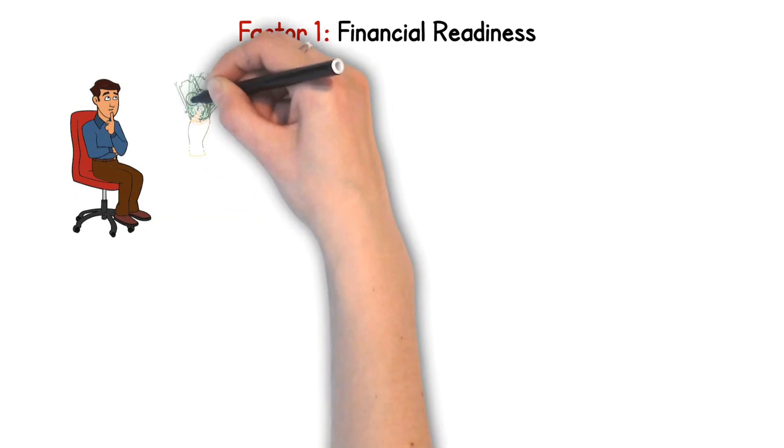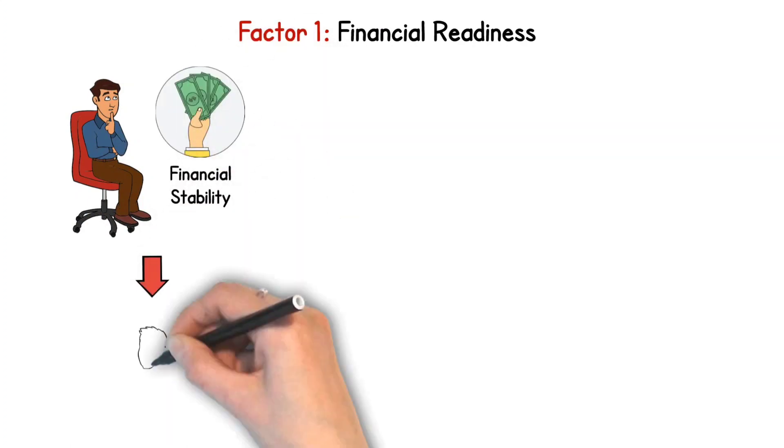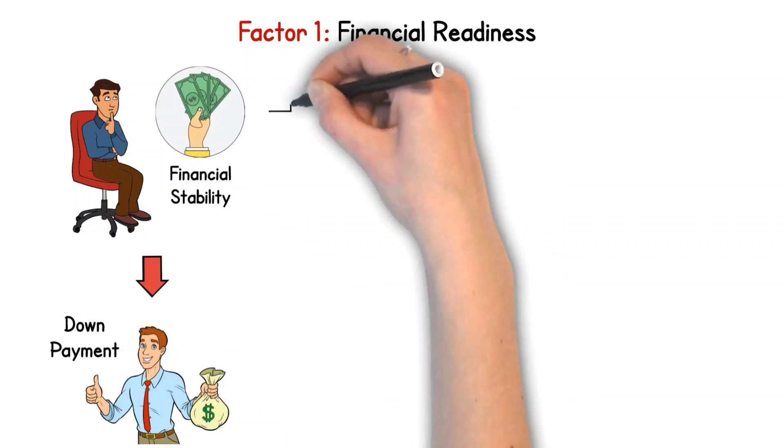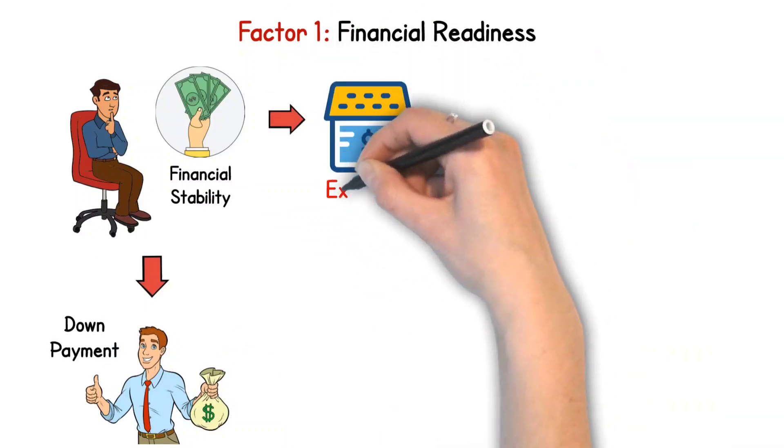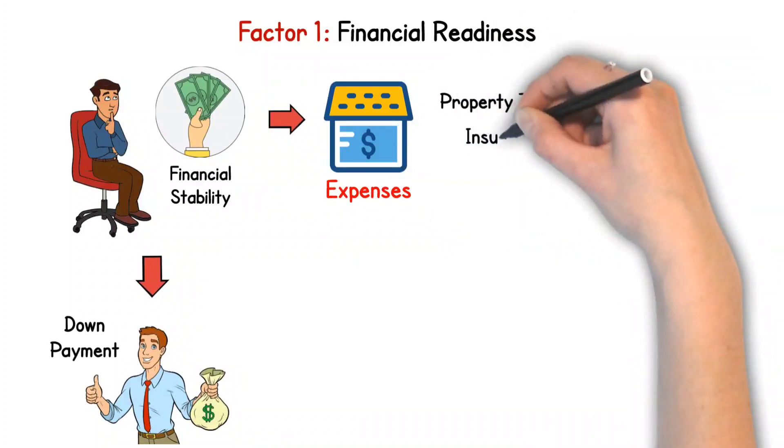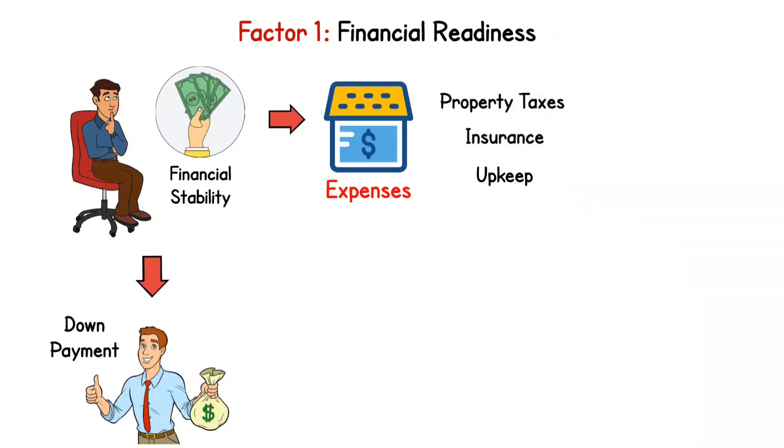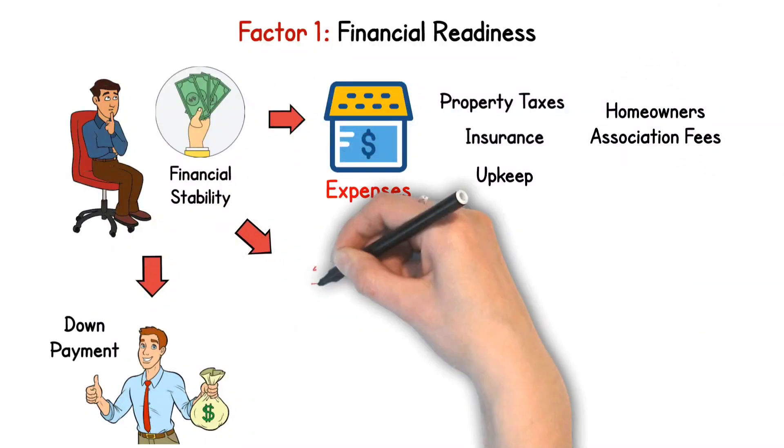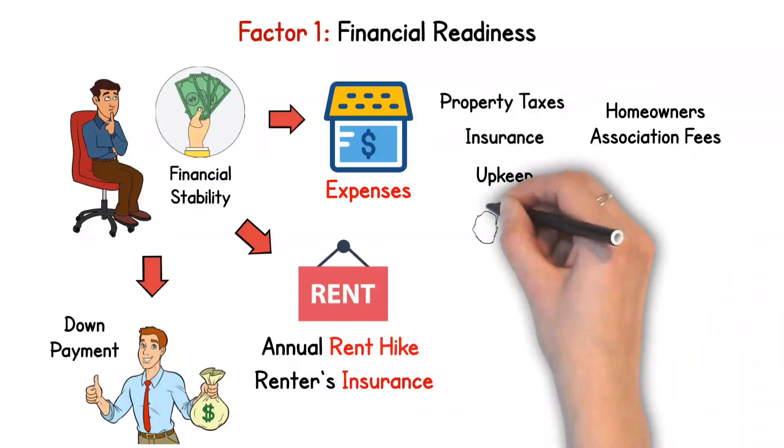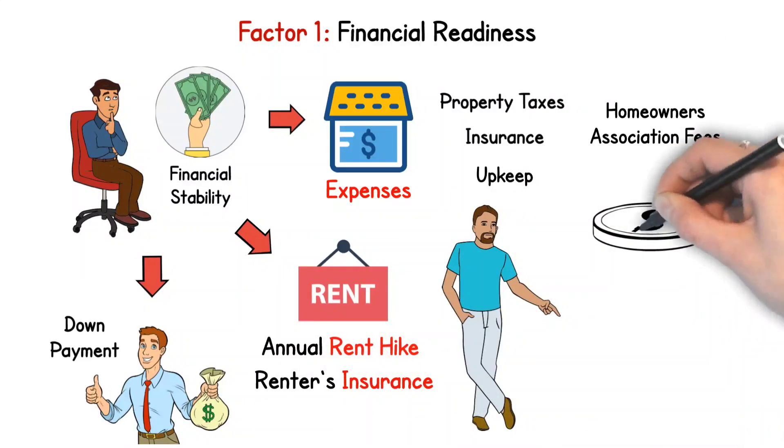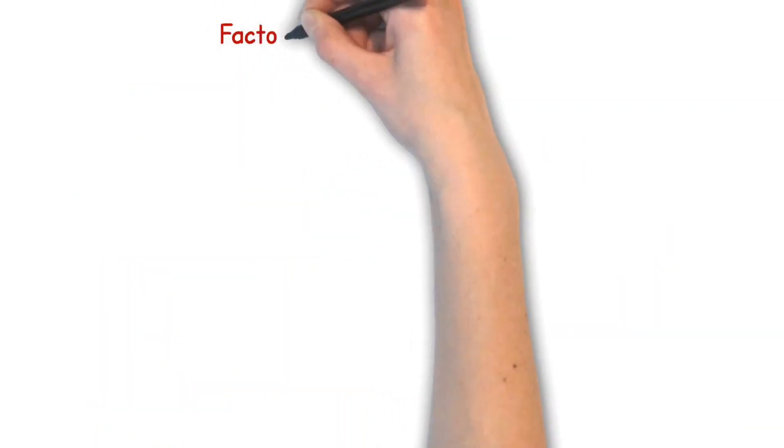Financial Readiness. Thinking about your financial stability is pretty key here. Have you squirreled away enough for a down payment if you decide to buy? Remember, owning a house isn't just about the initial purchase. It comes with its own set of ongoing expenses like property taxes, insurance, upkeep, and sometimes pesky homeowners association fees. On the other side, if you're looking at renting, the upfront costs are usually more manageable, but you might be hit with annual rent hikes. And don't forget about that renter's insurance. It's a must-have too. If you want to know if you're doing well financially, you can check one of our videos. Link is in the description box below.